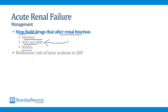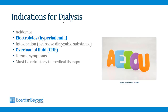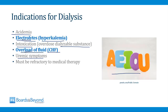One special and super high-yield point for your boards: patients who are on the diabetes drug metformin have a risk of developing lactic acidosis in the setting of acute renal failure. So you always want to stop metformin in a diabetic patient who develops acute renal failure. The indications for dialysis are remembered by the mnemonic AEIOU: A is for acidemia, E is for electrolytes (usually hyperkalemia), I is for intoxication from a dialyzable substance, O is for overload of fluid (congestive heart failure and pulmonary edema), and U is for uremic symptoms. Electrolytes and fluid overload are the most common reasons patients require dialysis. Always remember these indications must be refractory to medical therapy before dialysis is initiated.